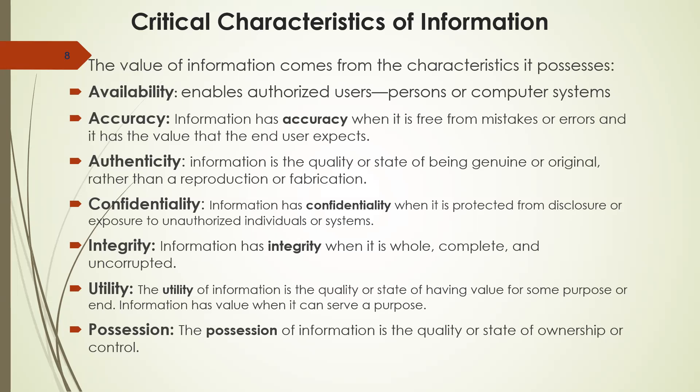For availability, it's only authorized users that should have access to those computer systems. Accuracy means information should be free from mistakes and errors such that expected users can access it. Authenticity is another characteristic — the information you have should be authentic, genuine, and original, not fabricated or copy-and-pasted from somewhere. Your kind of information should be very genuine.